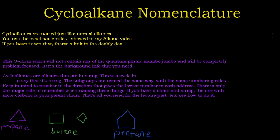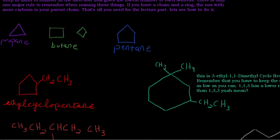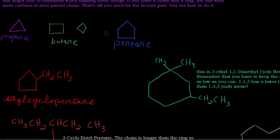And that's all you need for the lecture part, so let's see how to do it. Here I have propane, butane, and pentane. Nothing new from the MEPI that I showed you before. Propane has three carbons, butane, and pentane. You'll see butane as a square or as a diamond, which is just a square on its side. This is sort of introducing you to stereochemistry, where you'll start rotating molecules, but we're not quite there yet.